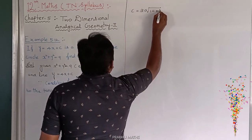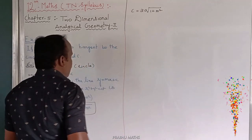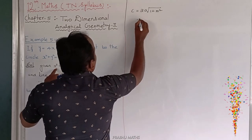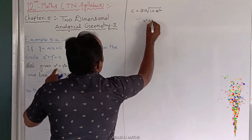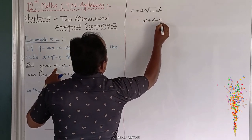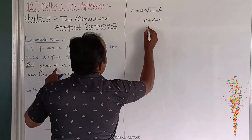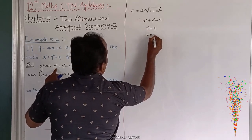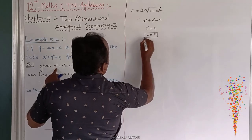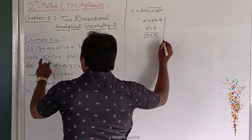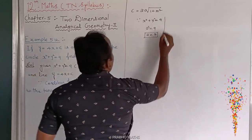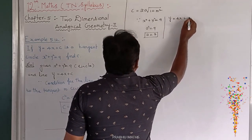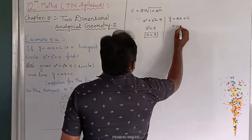Here, a is the radius of the circle. The given circle is x squared plus y squared equals 9, so a squared equals 9, therefore a equals 3. Next, comparing y equals 4x plus c with y equals mx plus c, we get m equals 4.